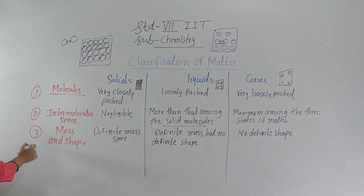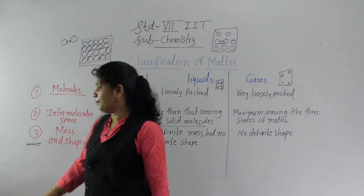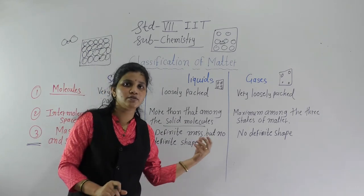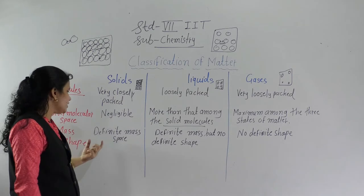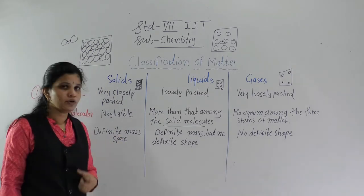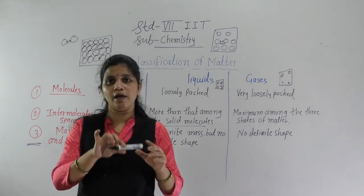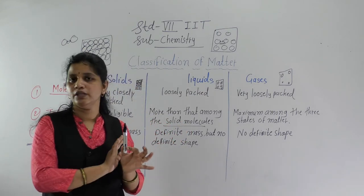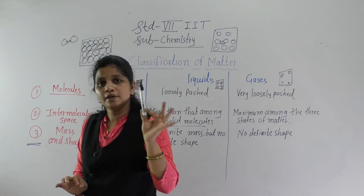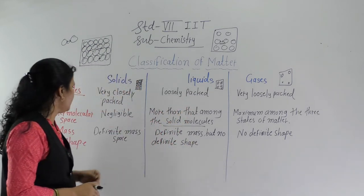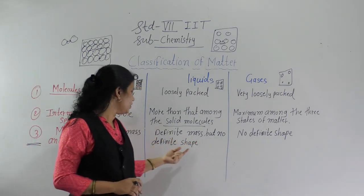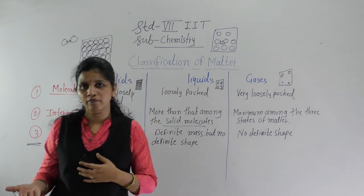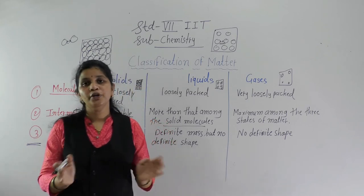Now the third point — mass and shape. In the solid state, there is a definite mass and definite shape. For example, the pen has a definite shape we can recognize, and a fixed mass. In the liquid state, there is definite mass but no definite shape. For instance, 5 ml of water has a fixed volume but no definite shape.